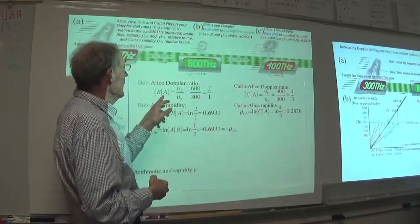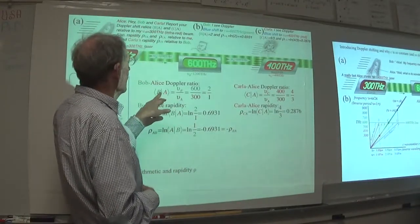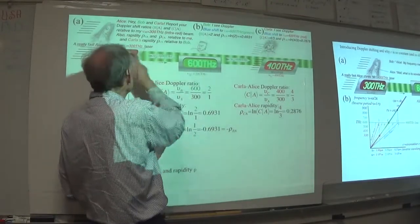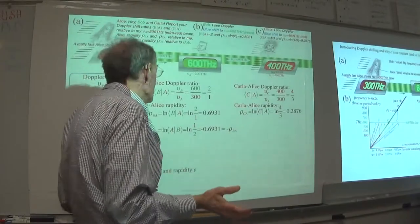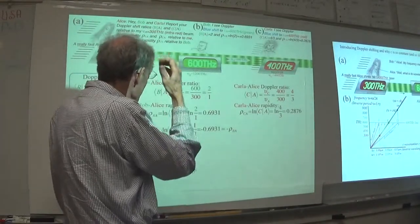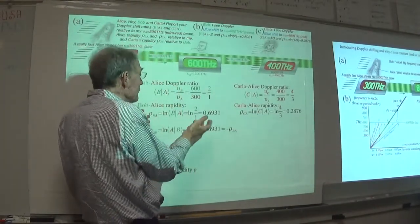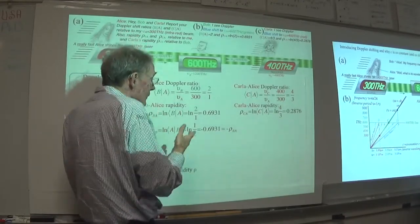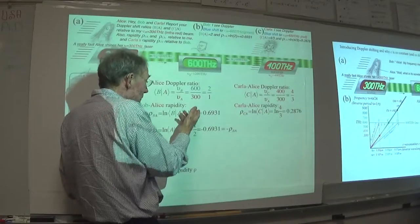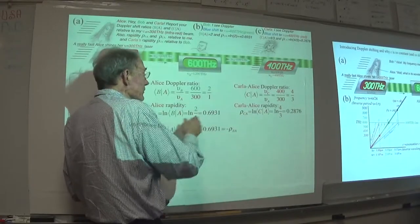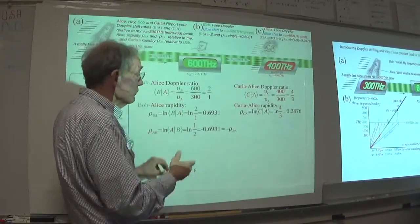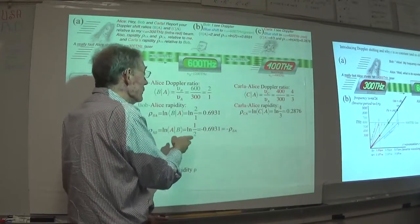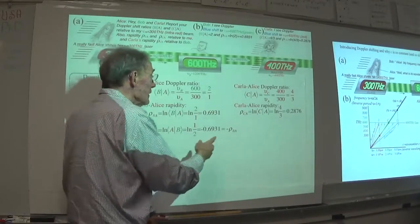We're looking at Alice as a source and Bob as a receiver. We're seeing 600 over 300, the ratio of these two readings - two to one for him. And then the Bob-Alice rapidity, if you were to put this as a logarithm of that ratio, is 0.69. So this is getting used to rapidities. You flip this, you change the sign - you have a minus sign here, so you get a logarithm with a minus sign.